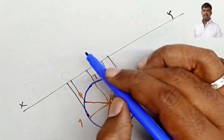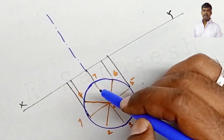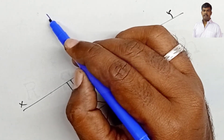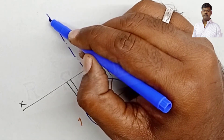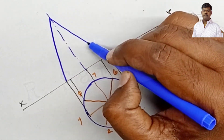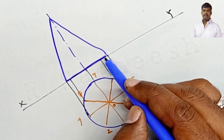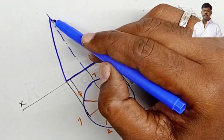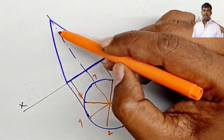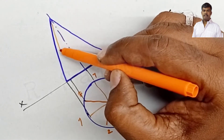The axis is 70 mm, so from XY draw the axis 70 mm upward and draw the triangle shape for the front view. The generators are drawn as thin lines since generators are imaginary lines only; the extreme generators are drawn thick.